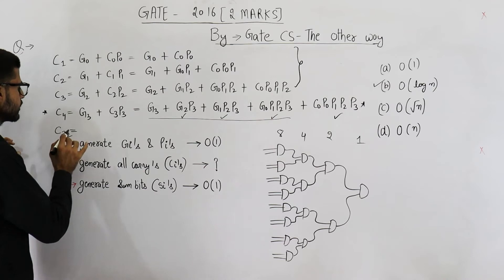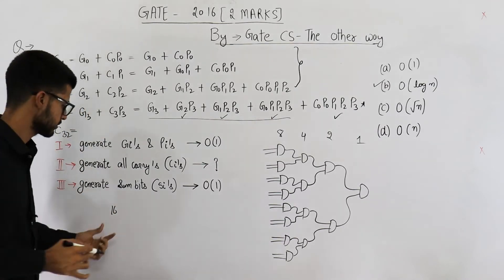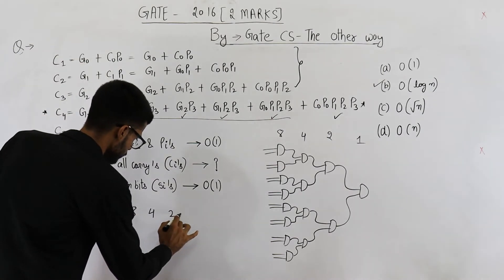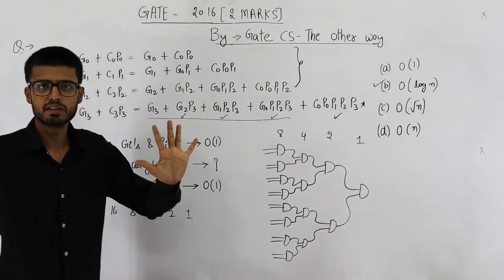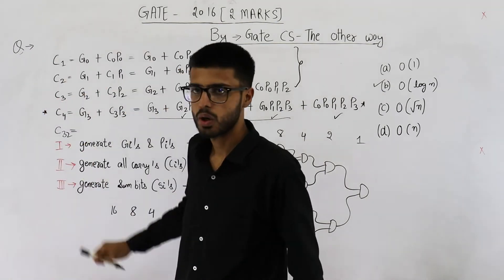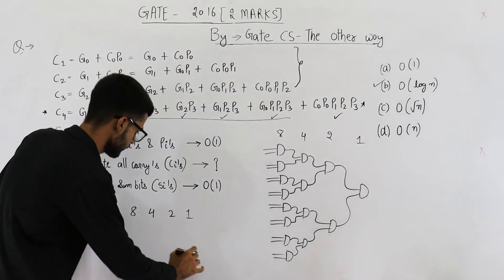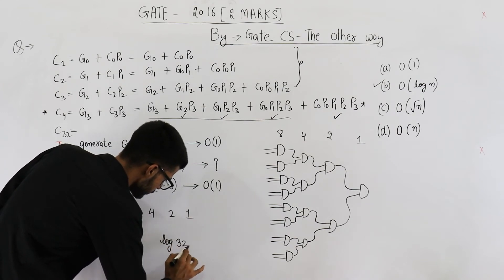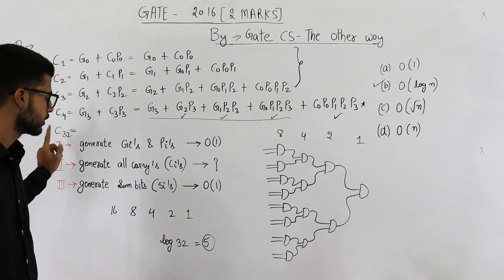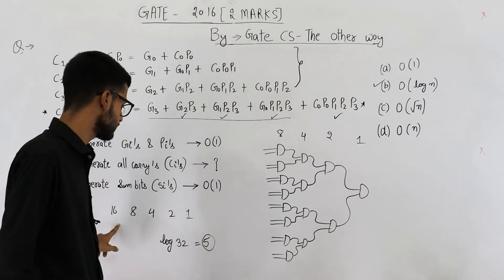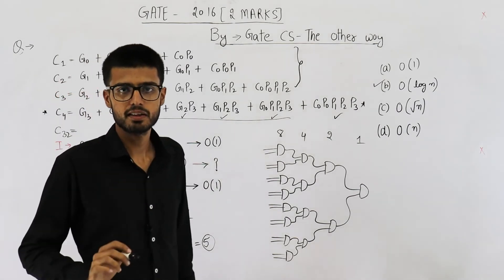What will happen for c32? At level 1 you have 16 items, then 8, 4, 2, and 1 — giving you 5 levels. And log 32 is also 5. So for 32 items you have 5 levels and log 32 is also 5, confirming that you have log n number of levels.